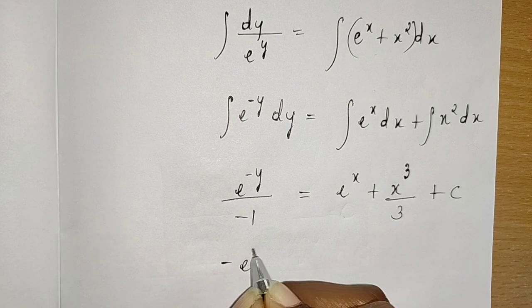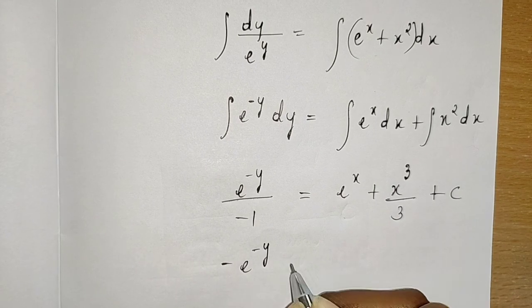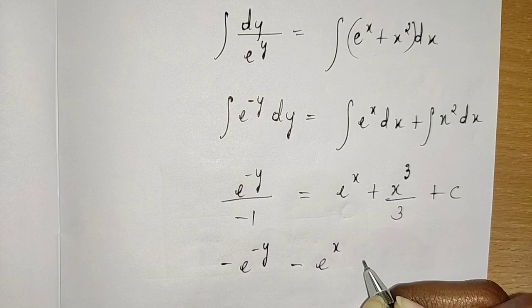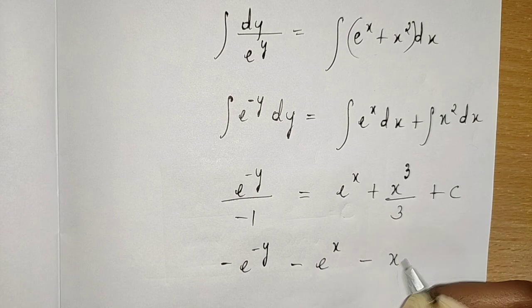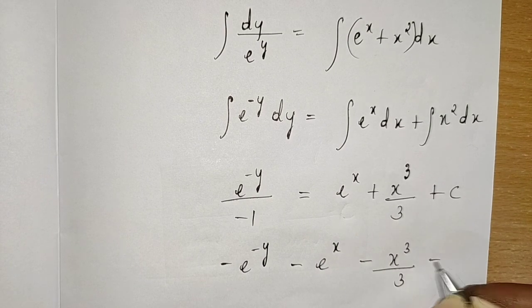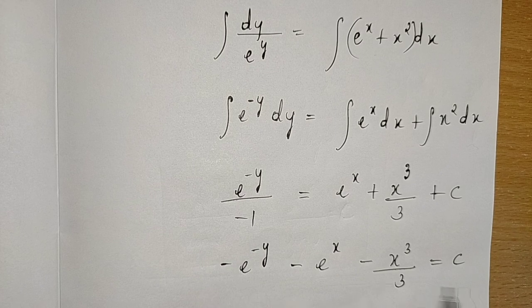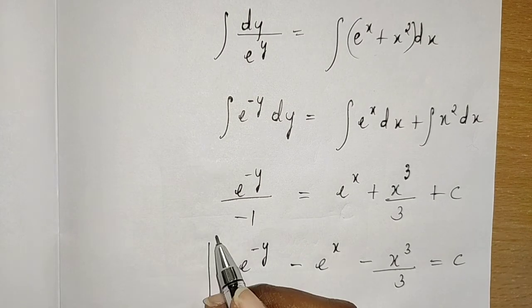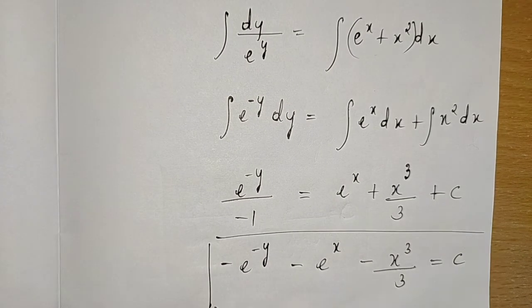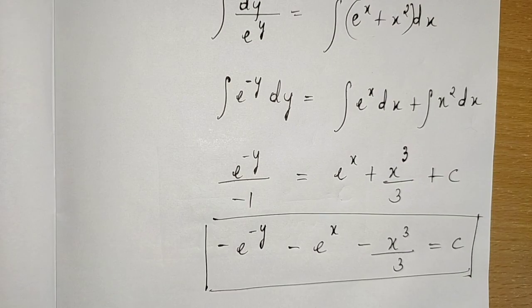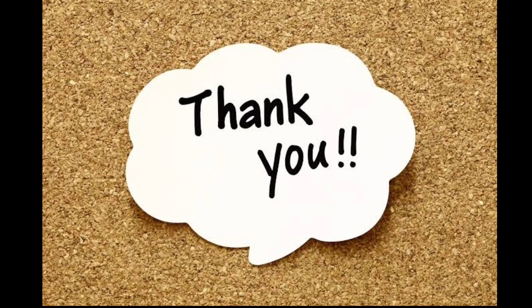So we have −e^(−y) = e^x + x³/3 + c, or equivalently −e^(−y) − e^x − x³/3 = c. This is the required differential equation. Thank you, have a good day.